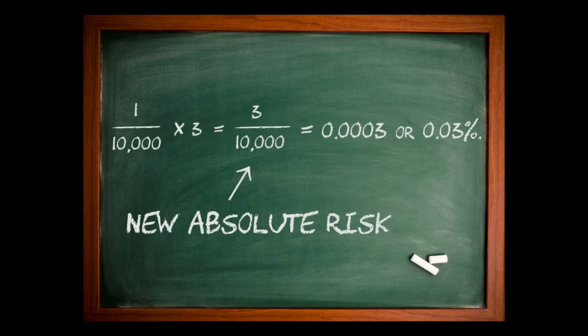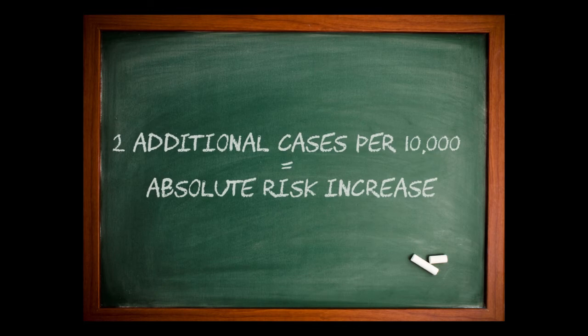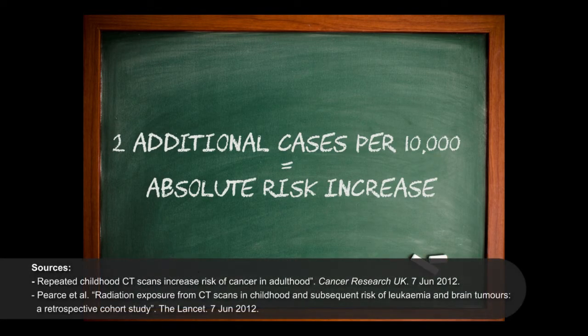The report of tripling the chance refers to the relative risk. A relative risk tripling, or a 200% increase, of one per 10,000 would be three per 10,000, or two additional cases. So three in 10,000 becomes the absolute risk, much less scary sounding.